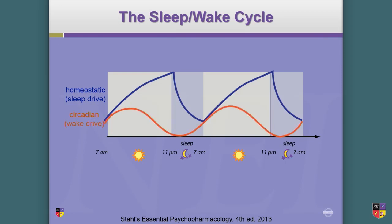We have a circadian or wakefulness drive, which is the opposite side. The homeostatic drive is making you sleepy, but you don't want to be asleep at 11 a.m. Your circadian clock pushes back so you stay awake and alert. So I get more and more tired, but my brain puts in chemicals like dopamine and norepinephrine to stay awake appropriately.